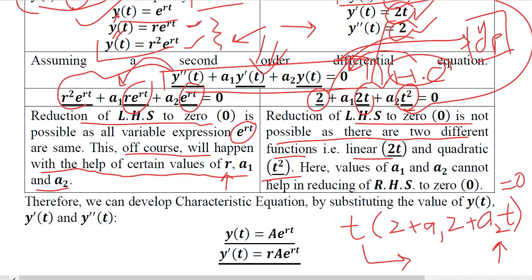Whereas if we consider exponent of R T as a common factor R square plus A1 into R plus A2, this will be the final result and here it can reduce to zero because this will go to the right hand side and reduce to zero. For certain values of R, A1, A2 this answer can be equal to zero.